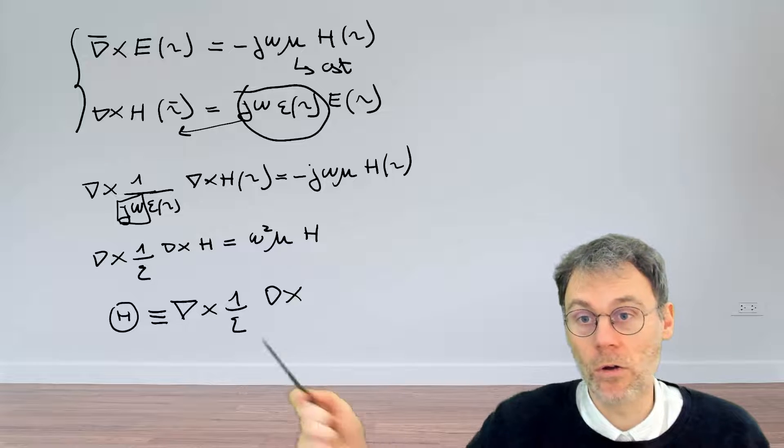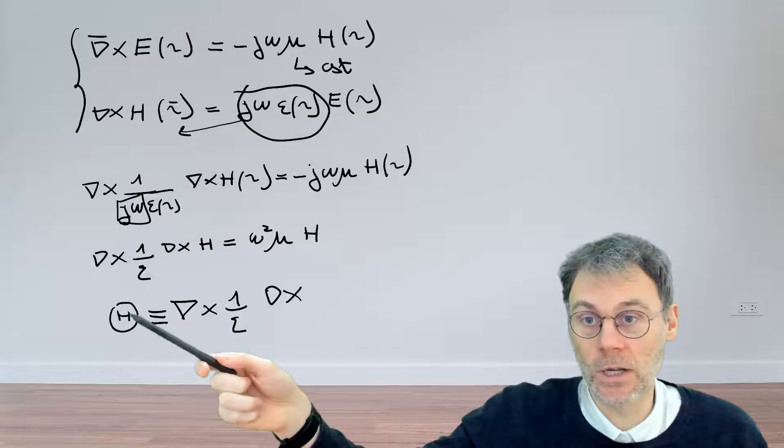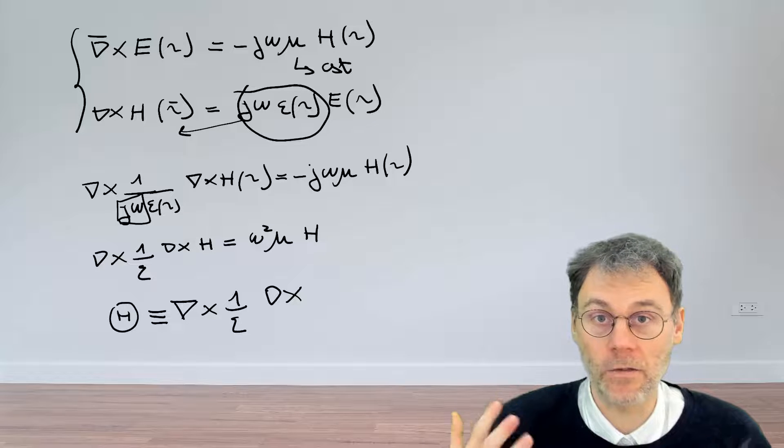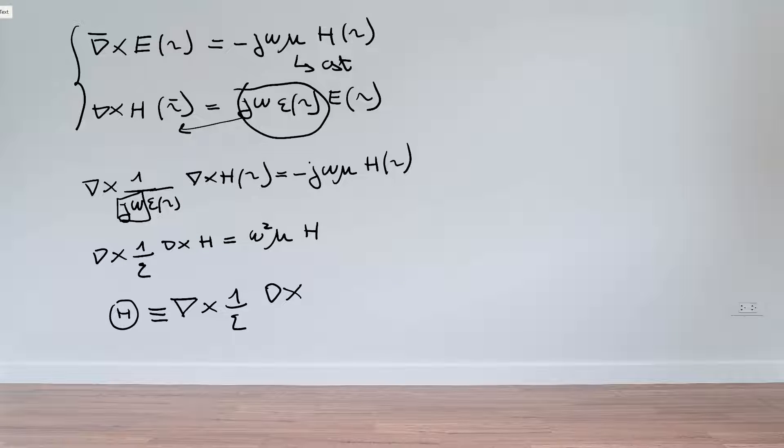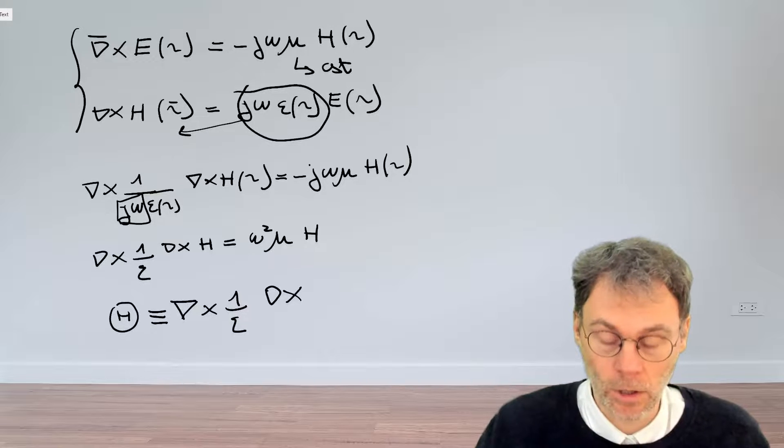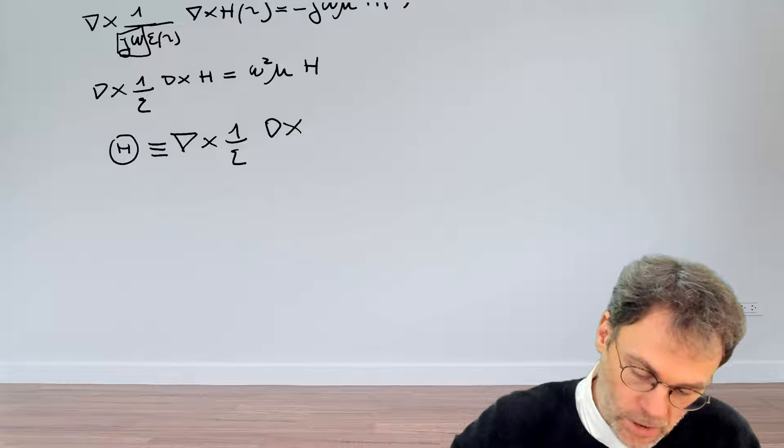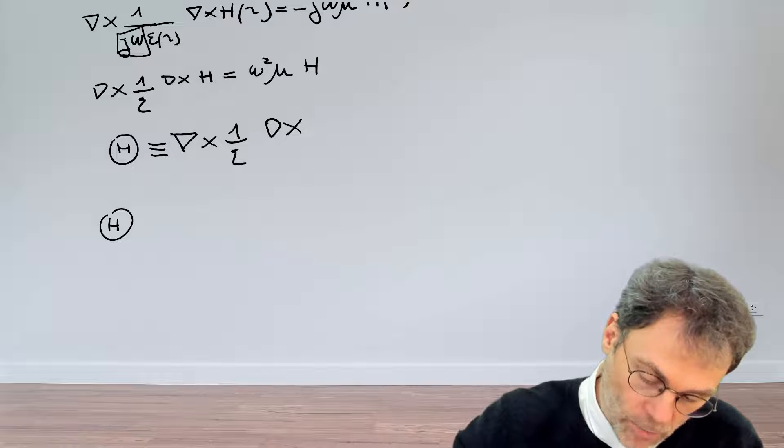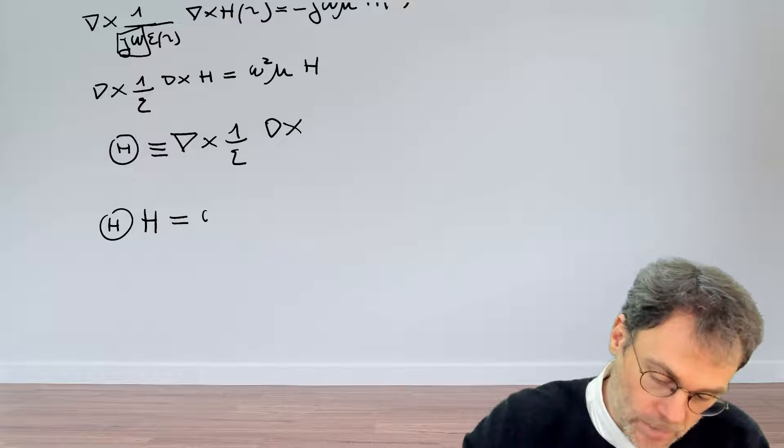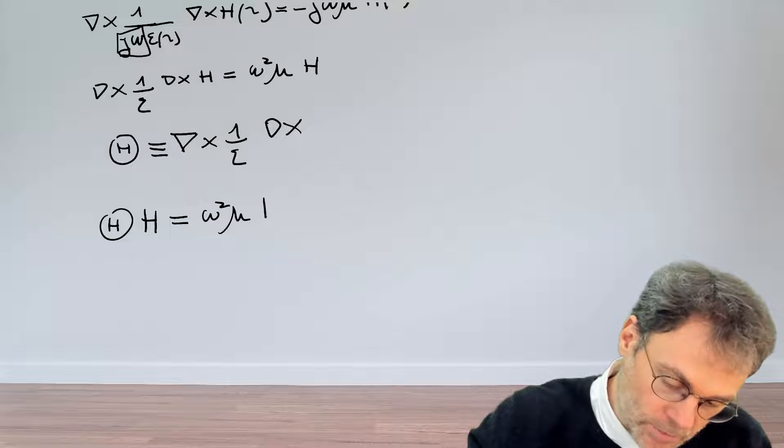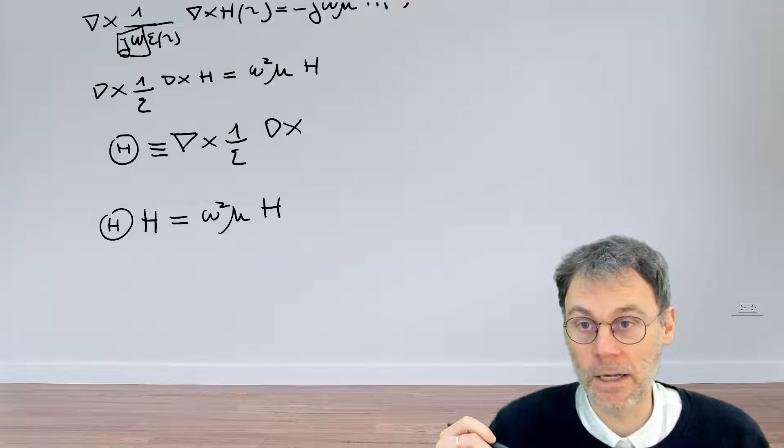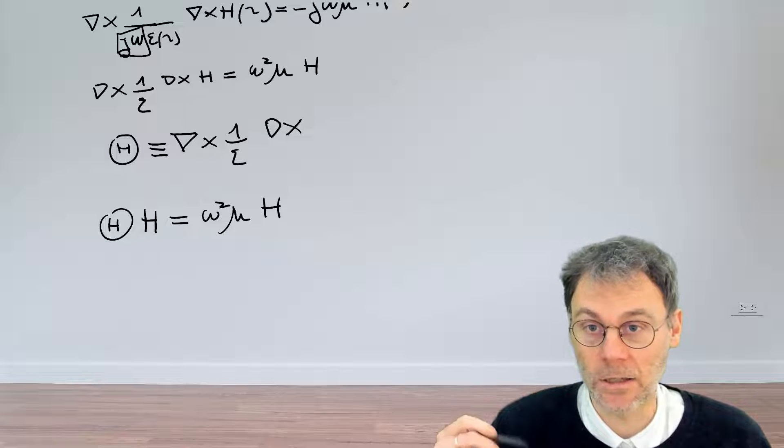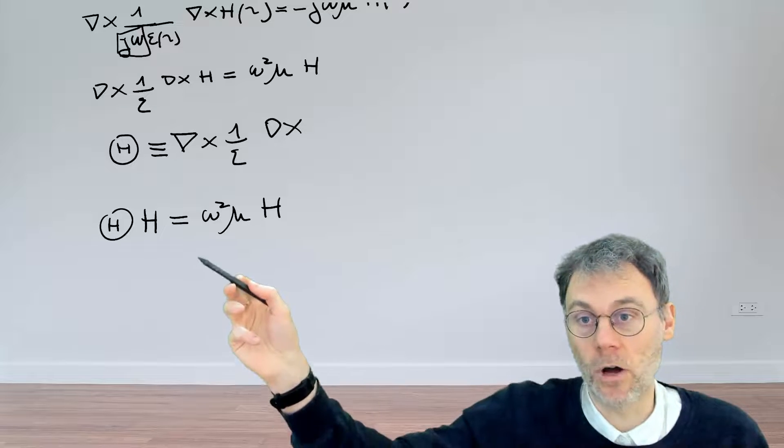Now pause the video, redefine that equation here using this definition of this operator, and see if you can identify what type of an equation we have in this case. So using the definition of this theta operator, we can write down that we have theta operating on our magnetic field H, gives us omega squared mu times the same field, the same H. So this tells us that in essence what we have is an eigenvalue problem, because we have an operator operating on a certain quantity, giving us back that same quantity times a certain constant.